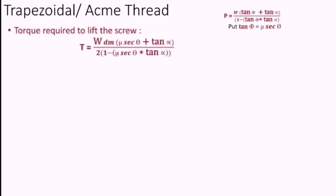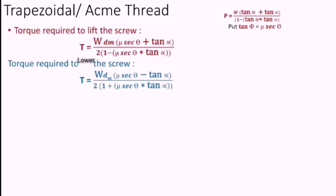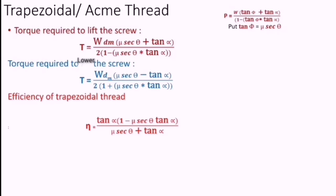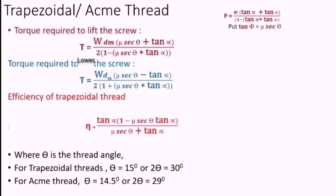Similarly, the torque required to lower the screw will be exactly the same expression, just with a sign difference — plus becomes minus. On the same lines, the efficiency of a trapezoidal thread is: η equals tan α × (1 minus µ sec θ × tan α) divided by (µ sec θ plus tan α). Here θ is the thread angle. For trapezoidal threads, θ equals 15° (i.e., 2θ = 30°), and for acme threads, θ equals 14.5° (i.e., 2θ = 29°).